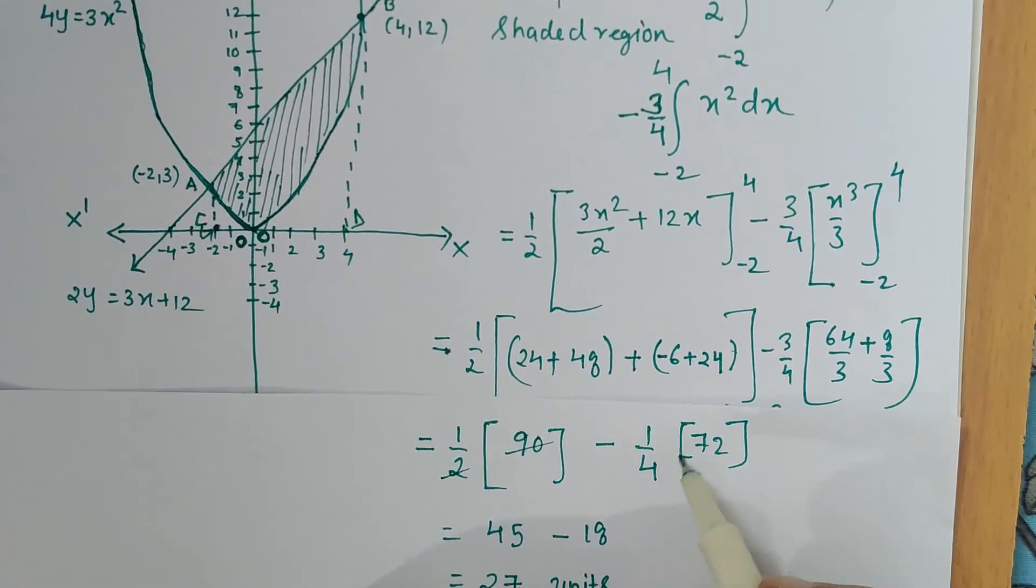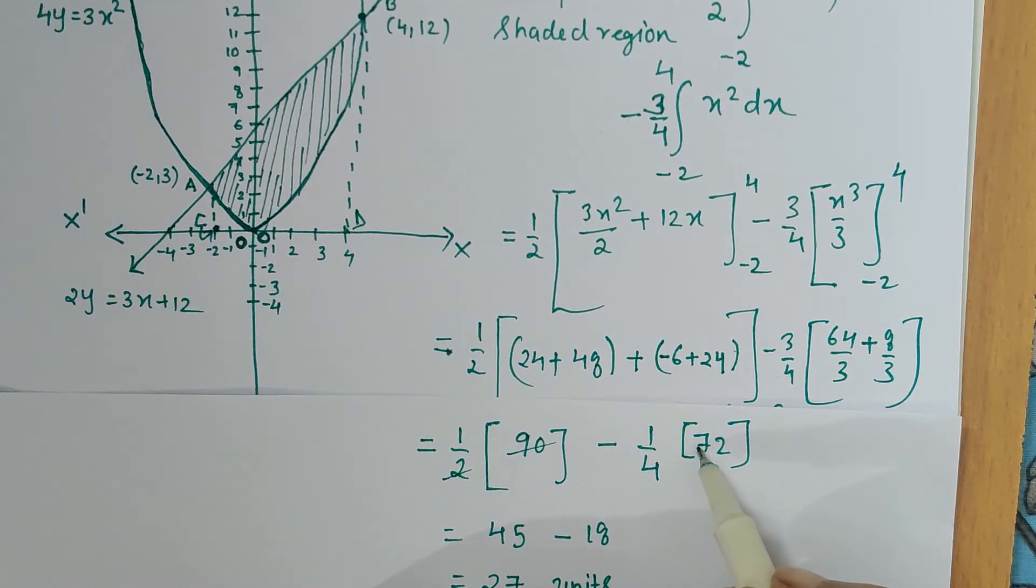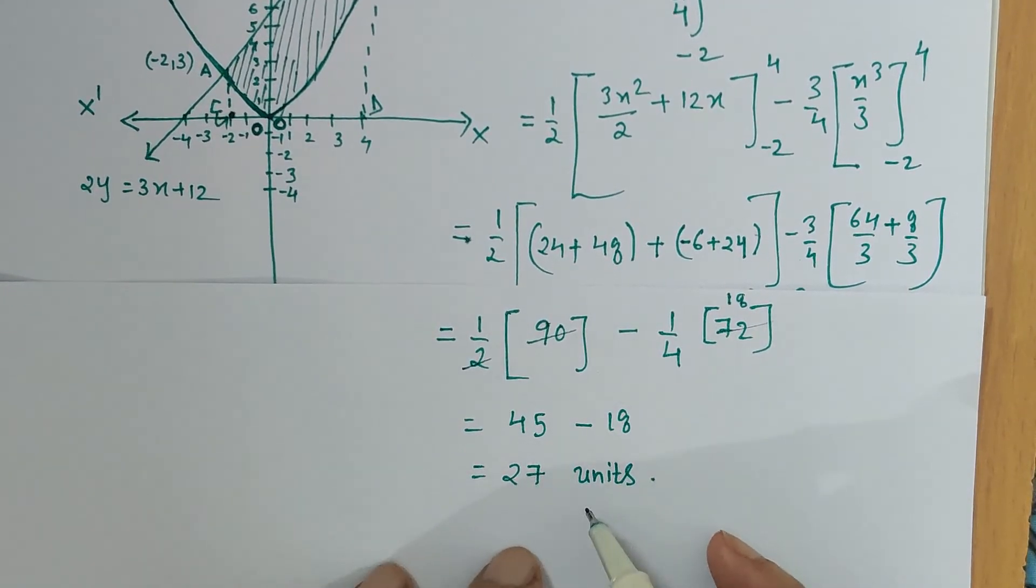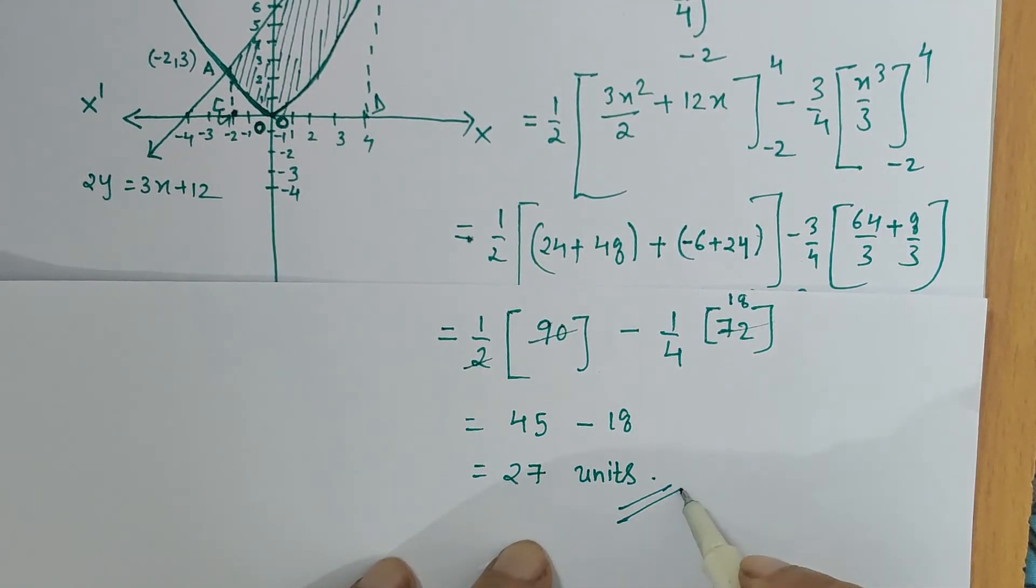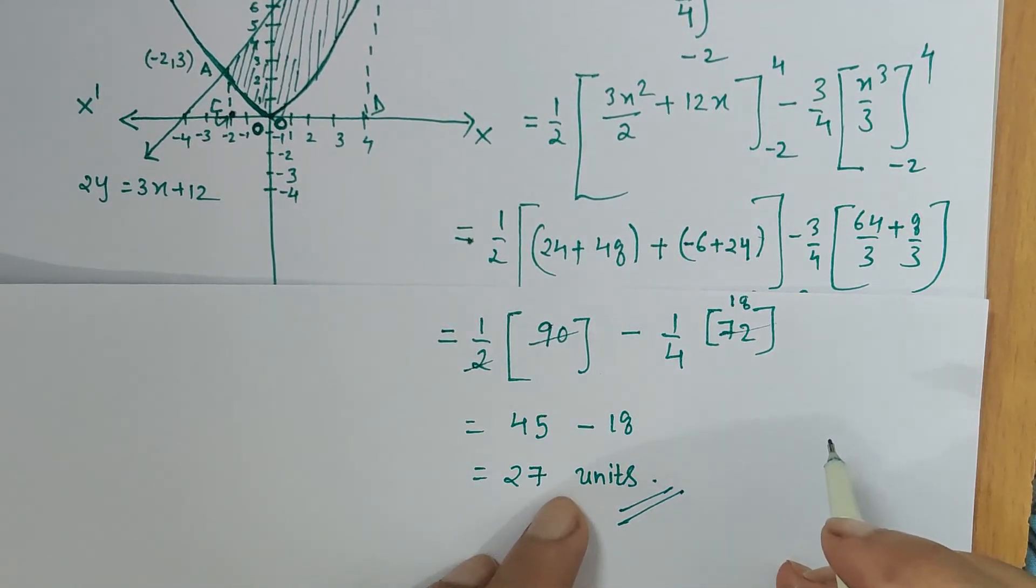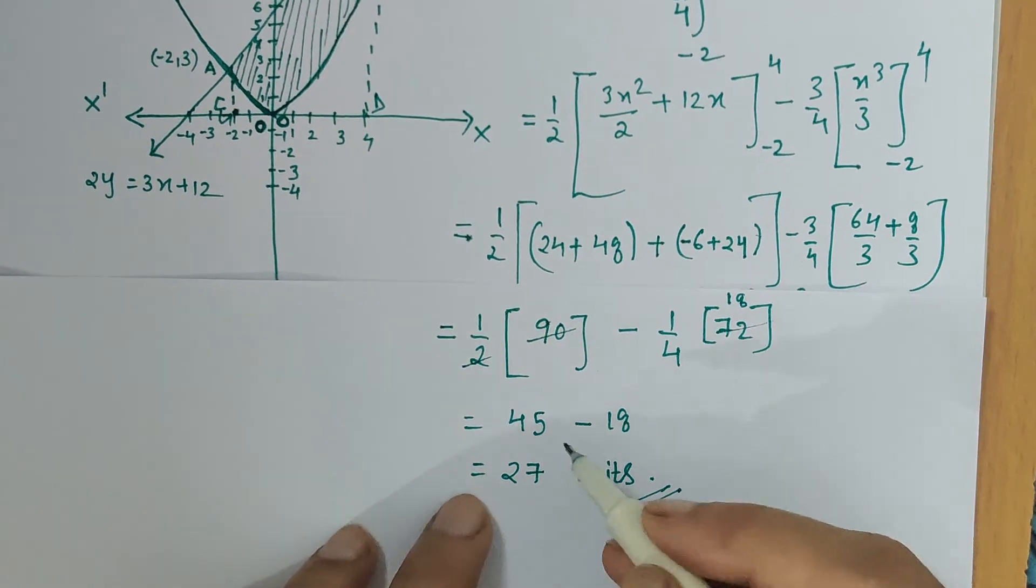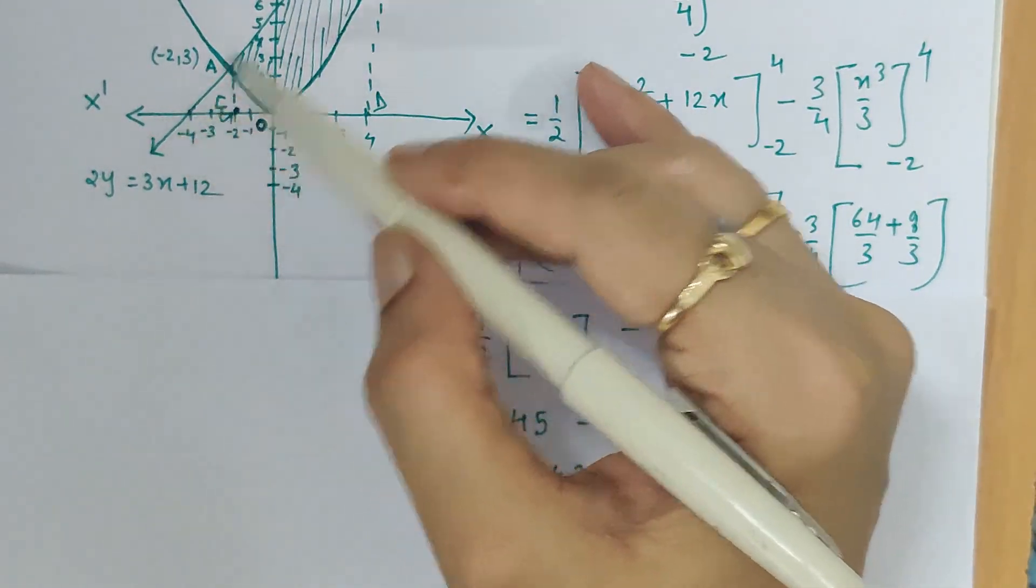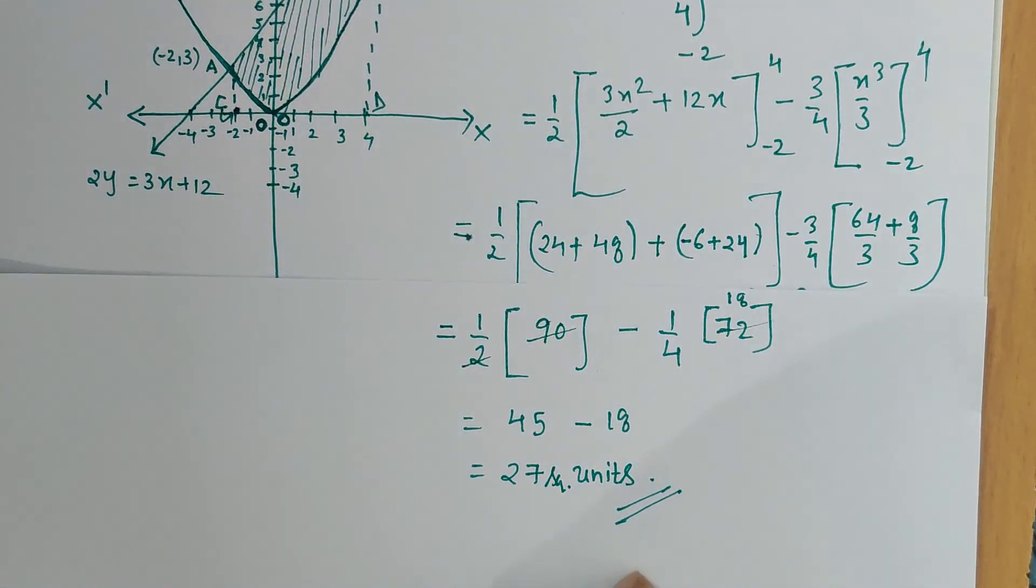And 3/4 × 24 is 18, so 45 - 18 = 27. Therefore 27 square units is the area enclosed by the straight line and the parabola. Thank you.